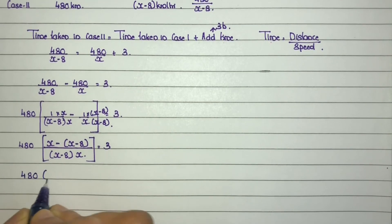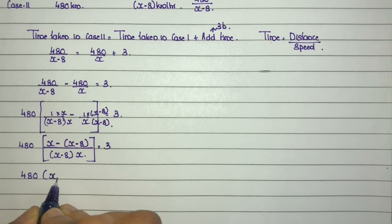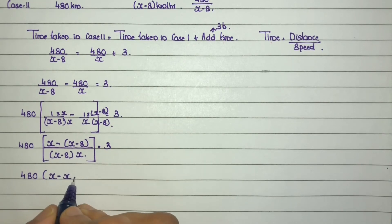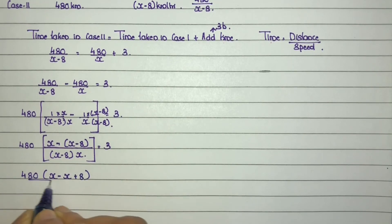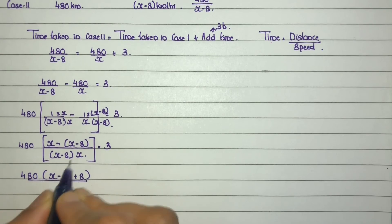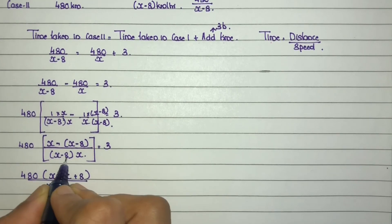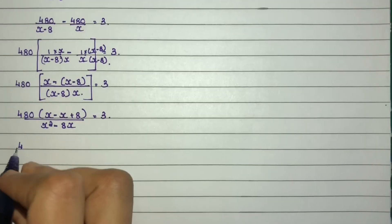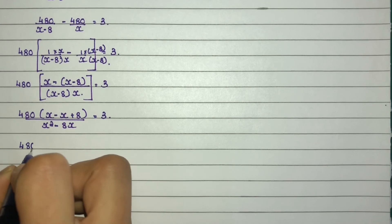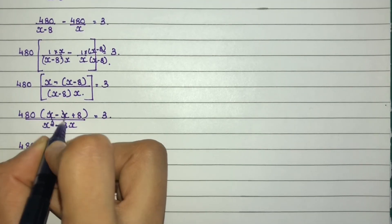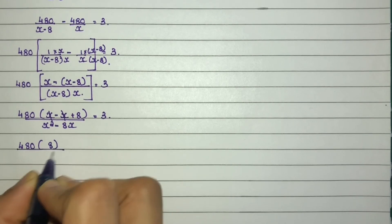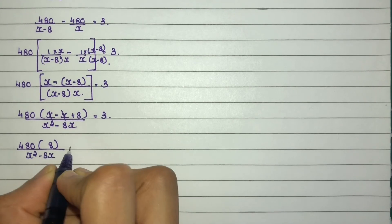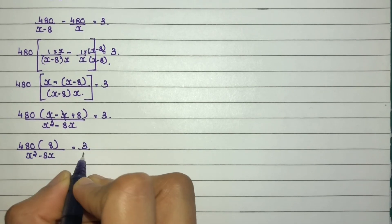After simplifying the numerator: 480 times 8 divided by [x squared minus 8x] equals 3, which gives 3840 divided by (x squared minus 8x) equals 3.